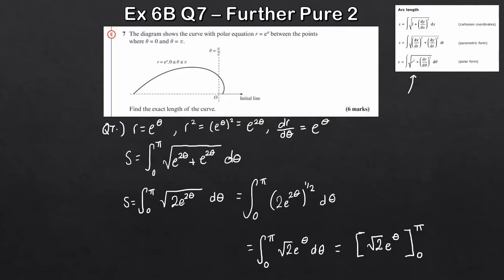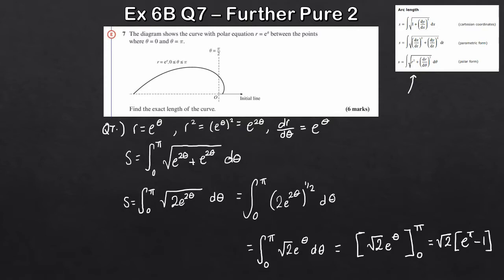All I've got to do now is plug these limits in. So this will be the square root of 2 times e to the pi. I'm going to factor this square root of 2 outside, so it's going to be e to the pi minus e to the 0, remembering we subtract the lower limit — so minus 1. And that would be our result: that's the exact length of the curve. Six marks for that. Mathematically this one wasn't too bad — it can get a bit more tricky, we might have to use substitution for example. Just be careful which form you're working in: Cartesian, parametric, or polar, and then just make sure you pick the right formula.